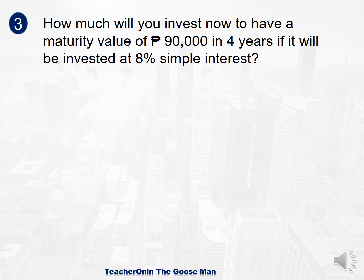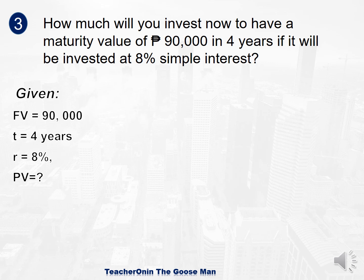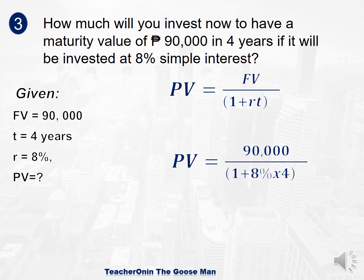Let's have another example: How much will you invest now to have a maturity value of 90,000 pesos in 4 years if it will be invested at 8% simple interest? The future value is 90,000, time is 4 years, and the rate is 8%. Since this is simple interest, we don't need the frequency. Present value equals 90,000 divided by 1 plus 8% times 4. The present value is 68,181.82. Take note that the present value is always less than the future value.